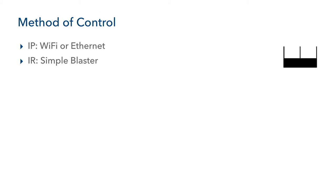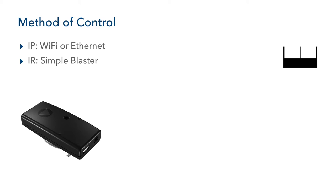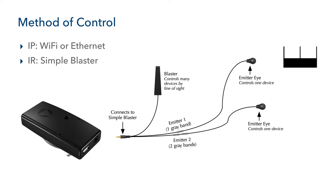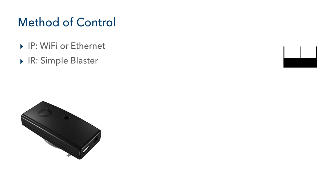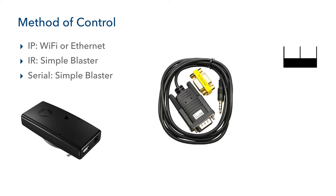IR control can be accomplished with the use of the Simple Blaster Complete found at the Simple Store website. The Simple Blaster Complete comes with the Simple Cable Complete, which offers two IR emitters and one blaster. The emitters can be used to control single devices such as your set-top box or a Blu-ray player, while the blaster can be used to control multiple devices by line of sight. Serial control is accomplished using the Simple Blaster and Simple Cable Serial. To determine which method is best for your devices, please refer to the compatibility page on the Simple Control website.